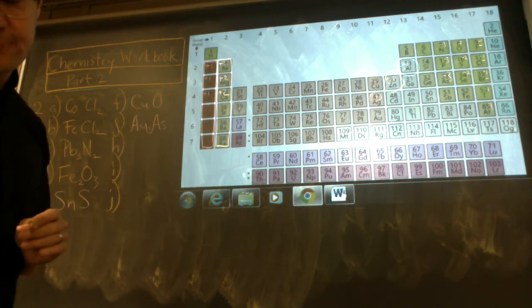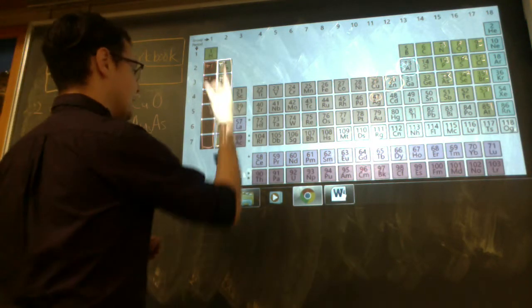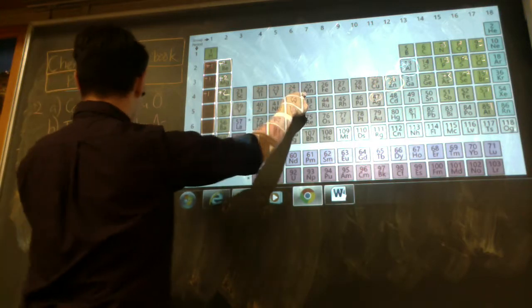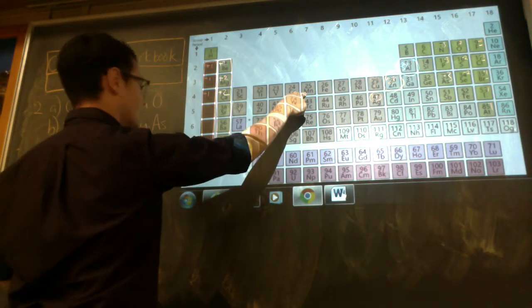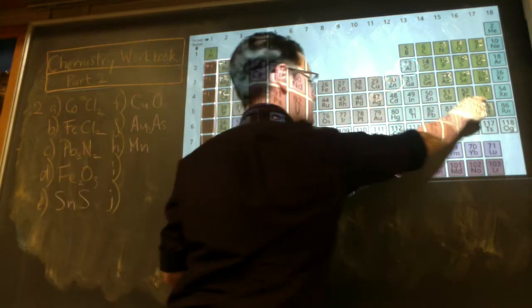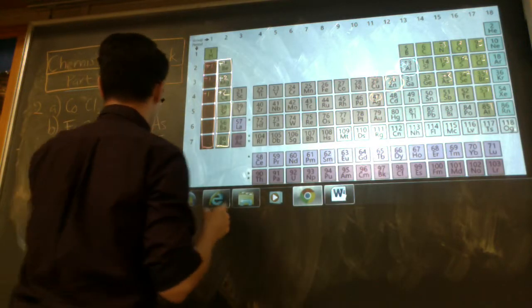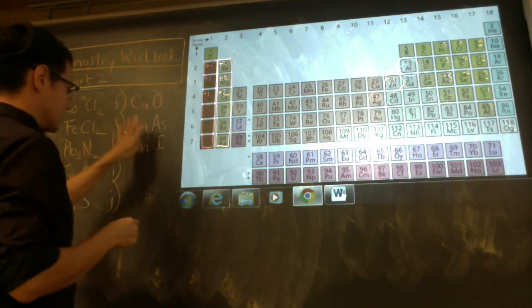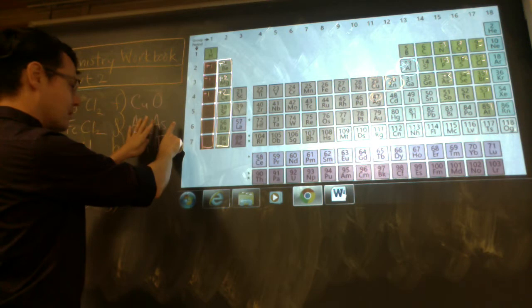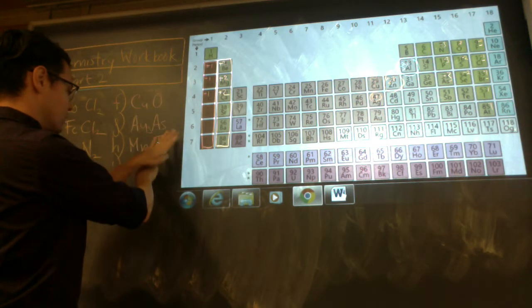Manganese(IV) iodide. Manganese is Mn right here. And iodide down here, number 1-. So manganese is 4+, iodine is 1-. So it's manganese 1 and iodine 4: MnI4.